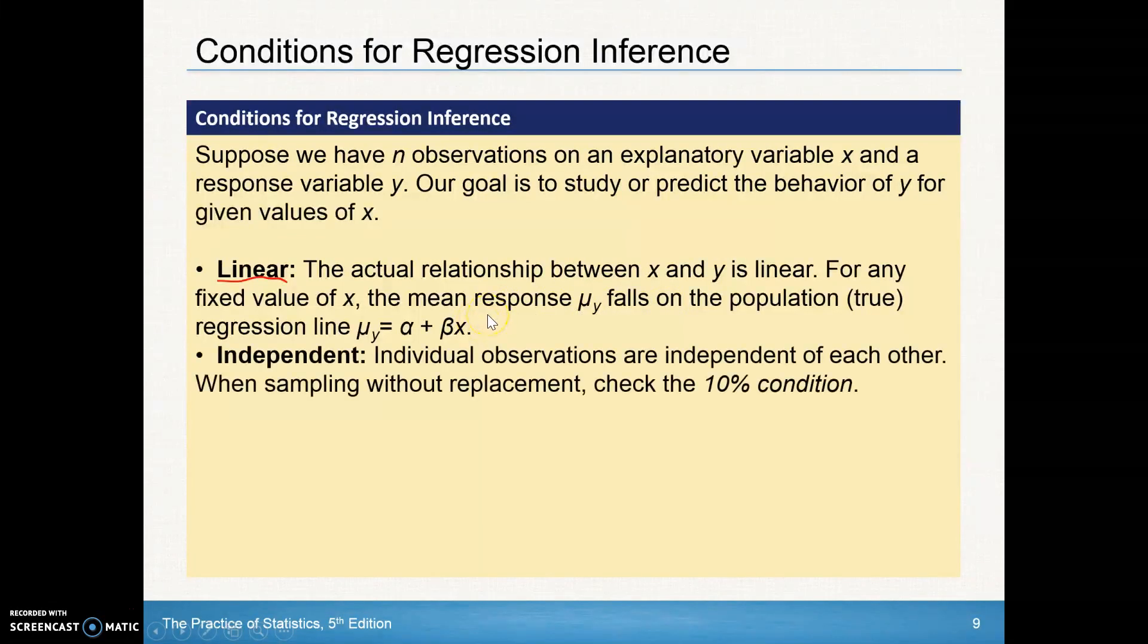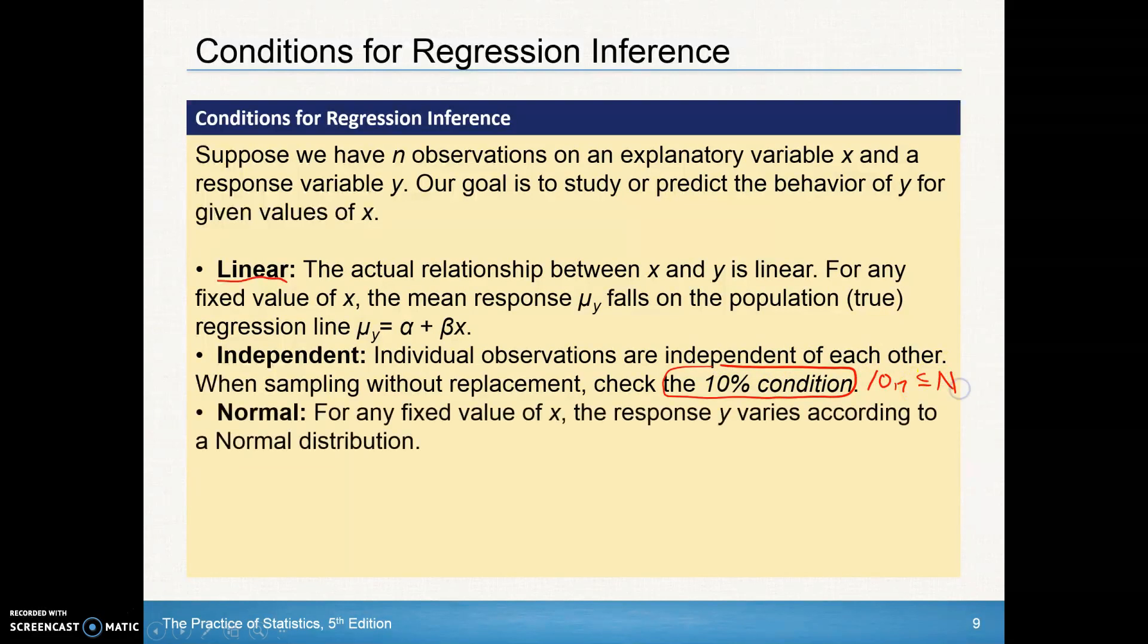Also, we've got to check for independence. You're always safe just checking that 10% condition. In other words, that 10 times your sample size is less than or equal to your population. Now, we're going to check for normality. When we check for normality, we're going to look for any fixed value of X that the response of Y varies according to a normal distribution. So we're going to be looking at our residuals. Do our residuals form a normal distribution?